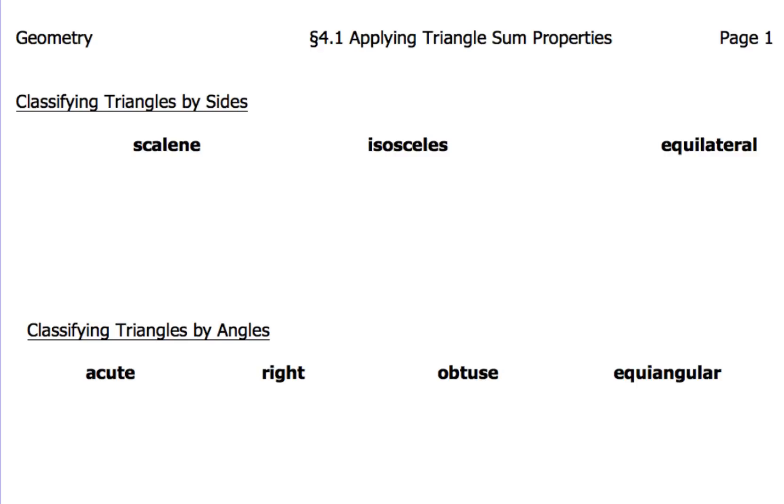Now, the first one we're going to take a look at, scalene. Scalene triangles have no congruent sides. Not one side is the same. Isosceles, these are going to have two congruent sides. And equilateral triangles, they have three congruent sides. So when you take a look at a picture for a scalene triangle, one of the things you're going to look at is that none of the sides are going to be the same. Now sometimes you can just visually look at it, but other times we'll actually have numbers there. So one side might be a three, one might be a seven, and the last side might be maybe an eight.